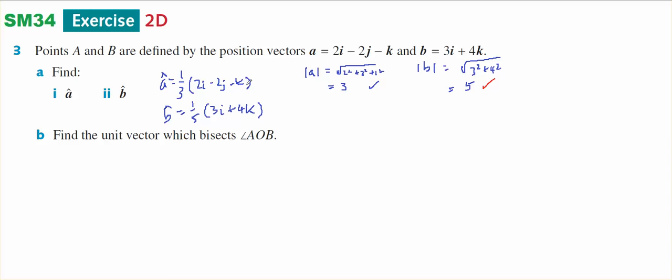Therefore, the unit vector of A is 1 third A, and the unit vector of B is 1 fifth B. So find the unit vector, therefore once I find the vector I divide it by its magnitude, which bisects this angle.